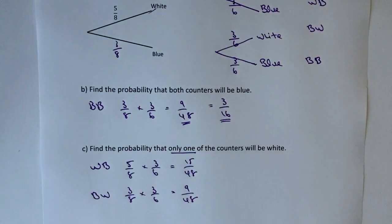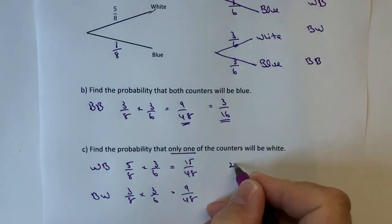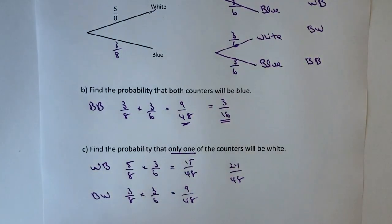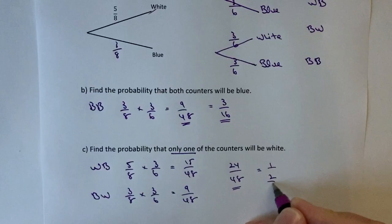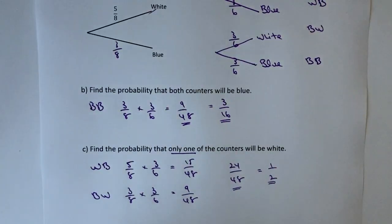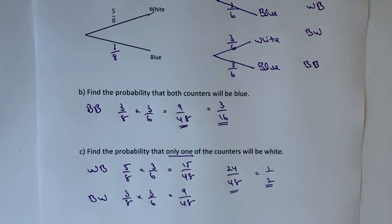To work out the probability that only one of the counters will be white, we add these together. So fifteen plus nine is going to be twenty-four. That's twenty-four out of forty-eight. That answers the question, although it's good to reduce it to a half.